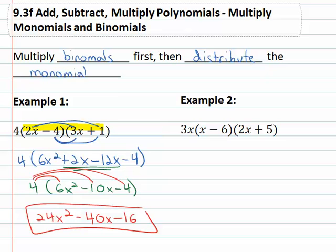Let's try another example. We have 3x times the binomial (x - 6) times the binomial (2x + 5). Again we're going to focus first on the binomials, multiplying them together. So we have 3x in front, rewriting that every step so we don't forget it.